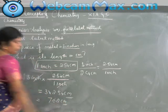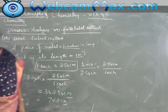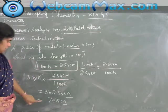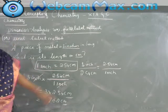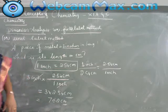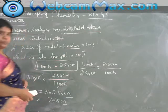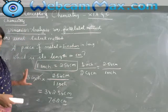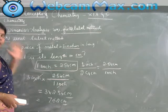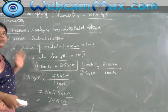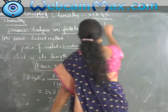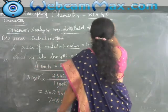I have converted my unit from inches to centimeters — 7.62 cm. That's the first sum. You are just converting one factor to another factor. Now let me move on to the second sum.